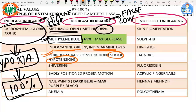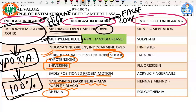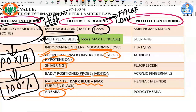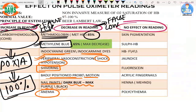Additional causes of falsely low readings include shivering, a badly positioned probe, motion artifact, and dark nail paints — maximum effect from dark blue, purple, or black colors — and anemia. All these conditions decrease the reading on the pulse oximeter.